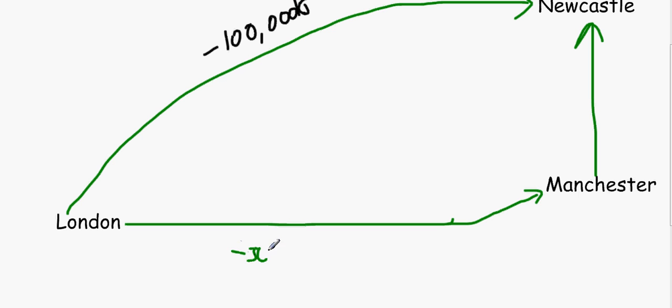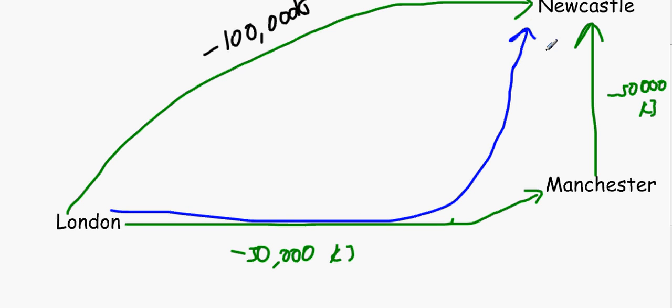So let's say that this was 50,000 kilojoules and let's say that this was 50,000 kilojoules. As you can see, if we took this route it would end up being minus 100,000 kilojoules, and as you can see it's exactly the same as that.